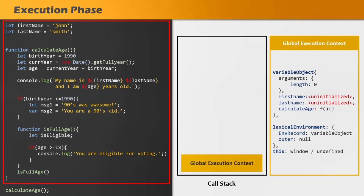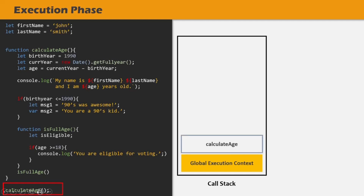This is the creation phase of the global execution context. Once it is complete, the execution phase will start. In the execution phase, the JavaScript engine will again scan over all the code written in global scope, and in the variable object it is going to set the variables and functions with their actual values. The value of this variable will also be determined during the execution phase. From the global execution context, we are also calling the calculateAge function, and when it is called, an execution context for that calculateAge function will also get created.